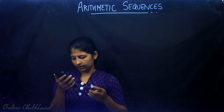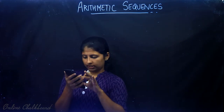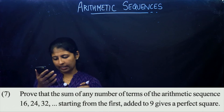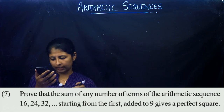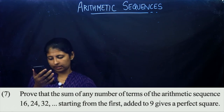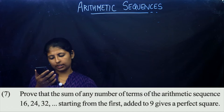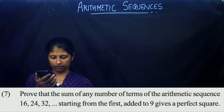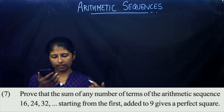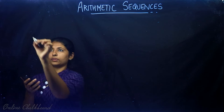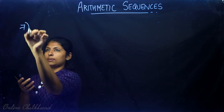Now in question number 7: Prove that the sum of any number of terms of the arithmetic sequence 16, 24, 32, starting from the first, when added to 9, gives a perfect square.